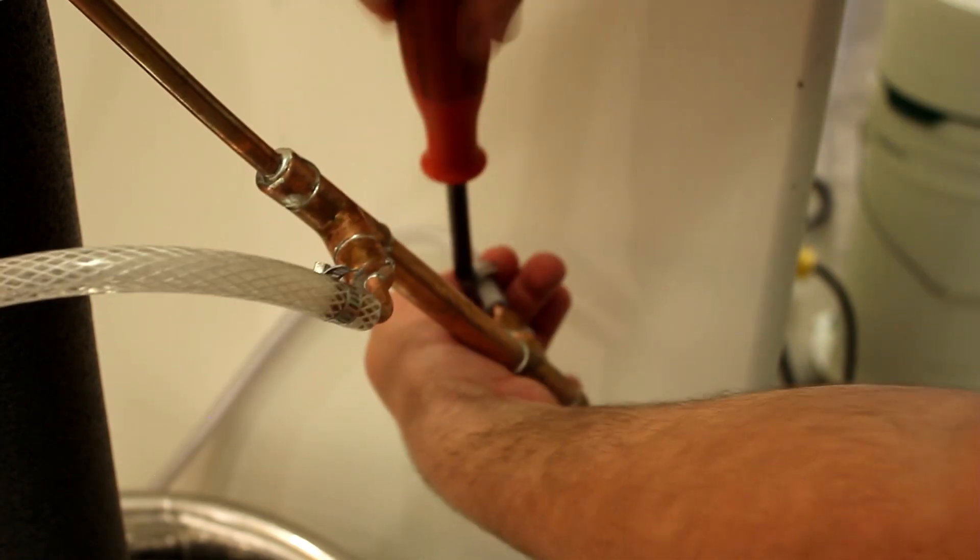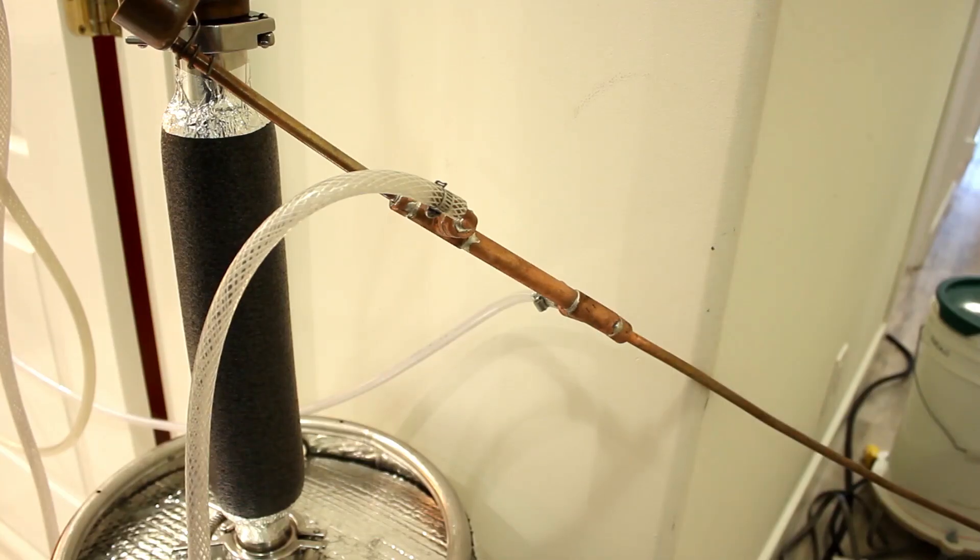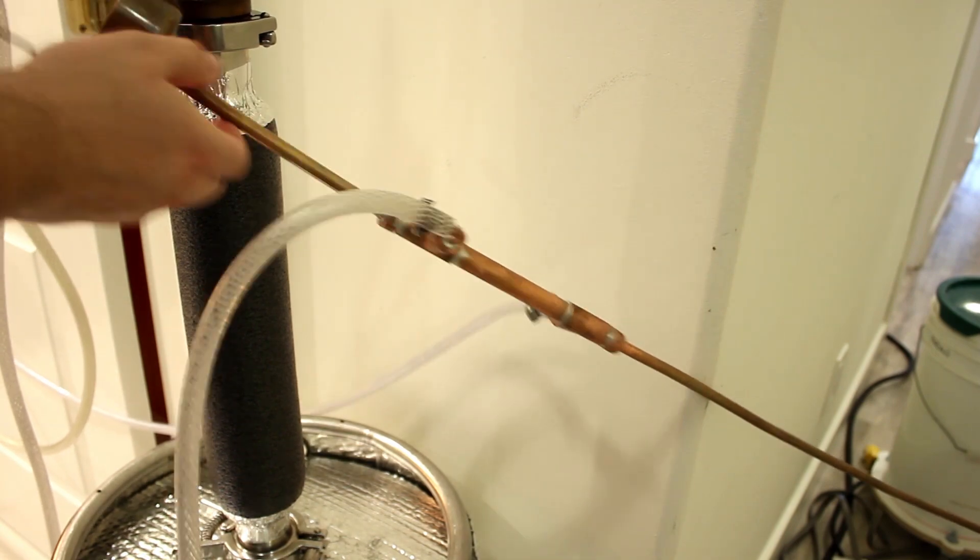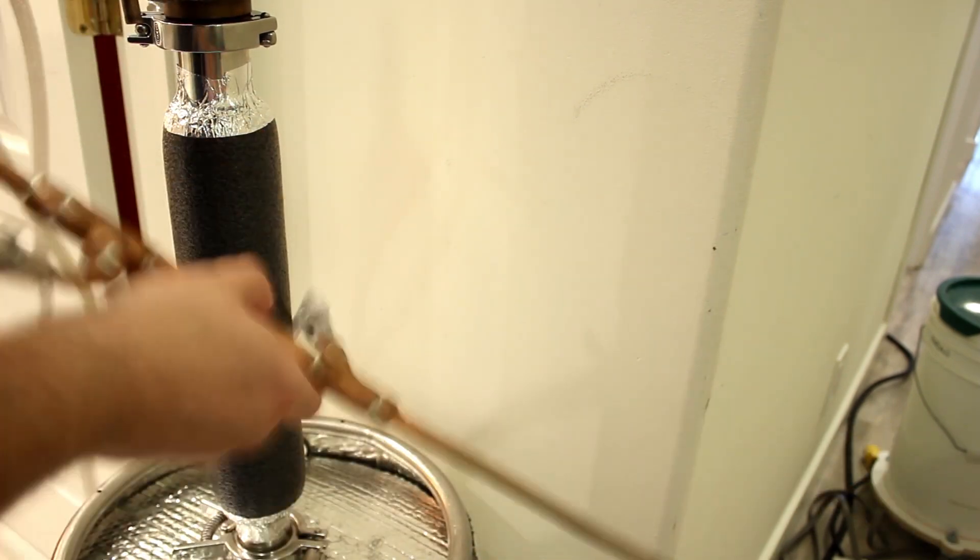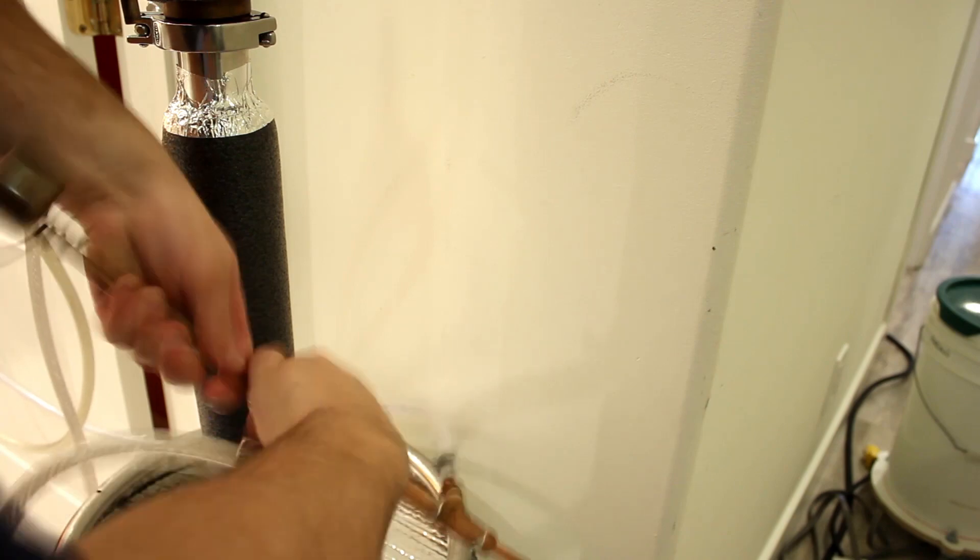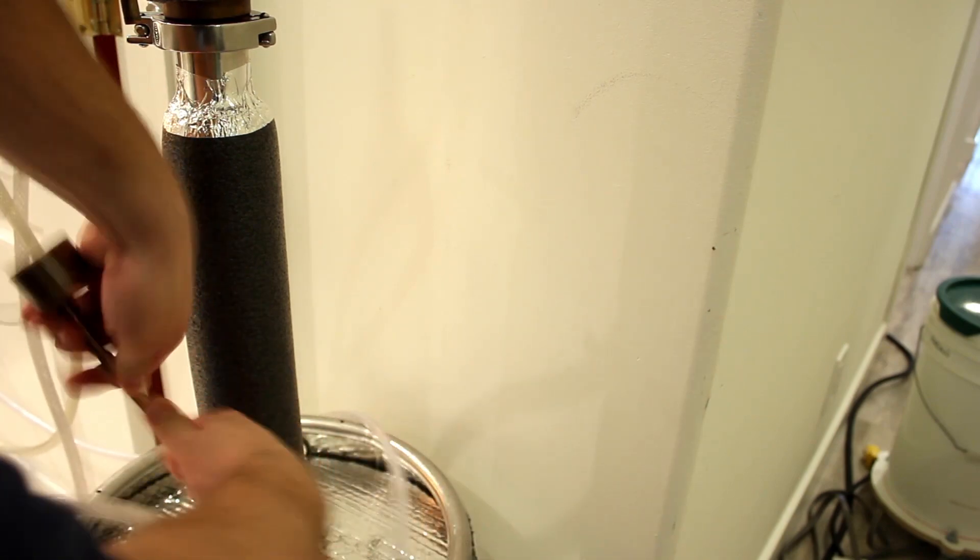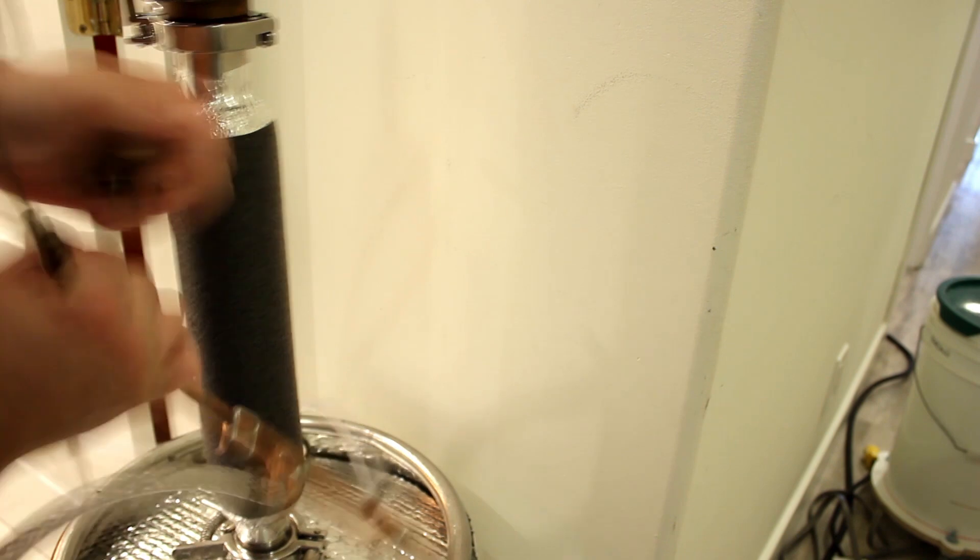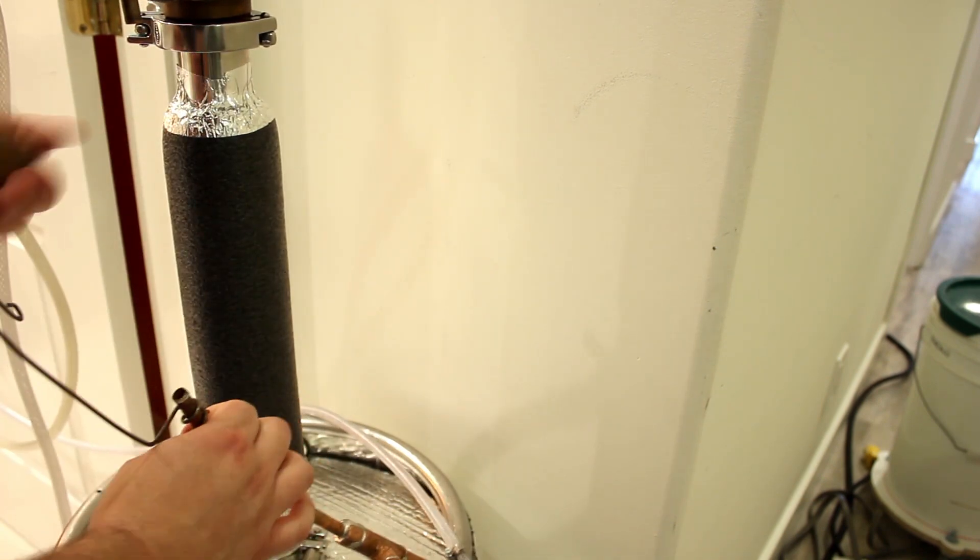So, like a moron, I got to bending my Liebag because I wanted to get it more horizontal to prolong the contact of the distillate with the jacketed area of the Liebag condenser. While doing this, I bent and broke off the funnel area of the condenser.